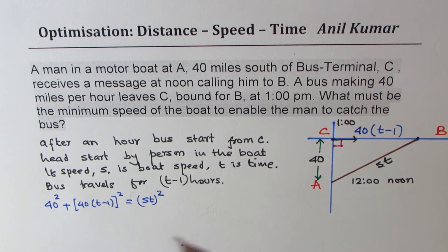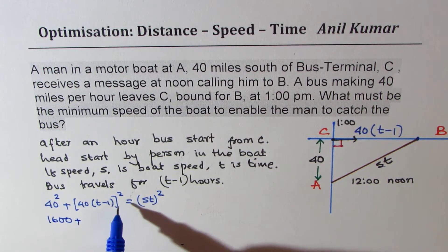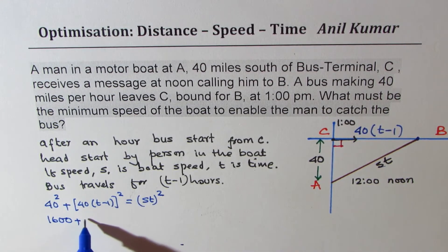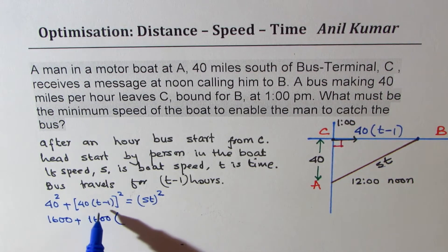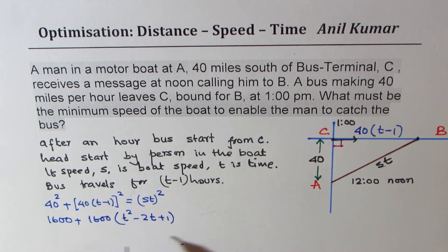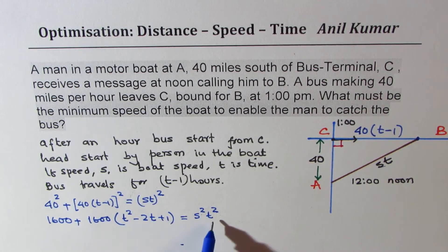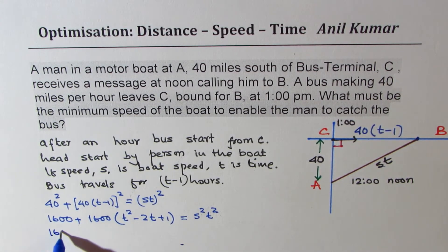Let us rearrange this particular equation. What we get here is 1600 plus, let us square it. When you square, we get again 1600 times, I will expand t minus 1. So we get t squared minus 2t plus 1.